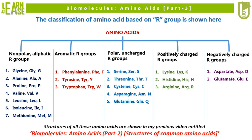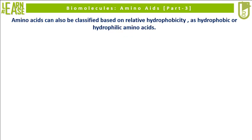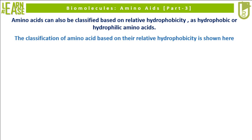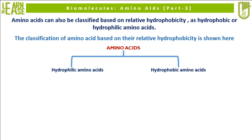Structures of all these amino acids are shown in my previous video entitled Biomolecules, Amino Acids, Part 2: Structures of Common Amino Acids. Now I will portray other ways to classify amino acids. Amino acids can also be classified based on relative hydrophobicity, as hydrophobic or hydrophilic amino acids. The classification based on relative hydrophobicity is shown here.